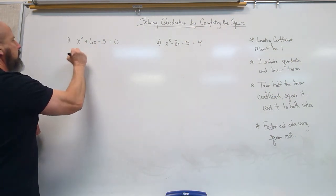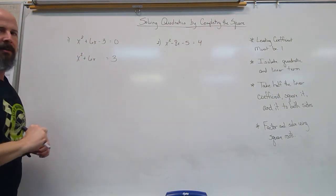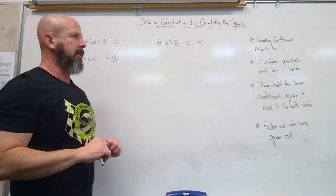So I'm going to take that negative 3 and move it to the other side. It would give me a positive 3. So that's what we mean by get those two guys alone, quadratic and the linear.